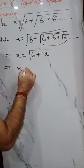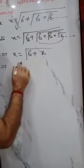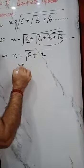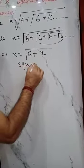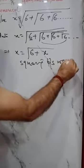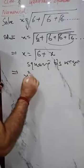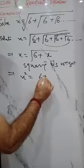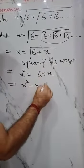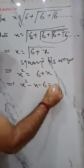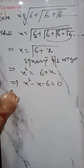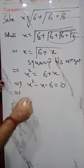Squaring both sides, we get x² = 6 + x. Rearranging, we get the quadratic equation x² - x - 6 = 0.